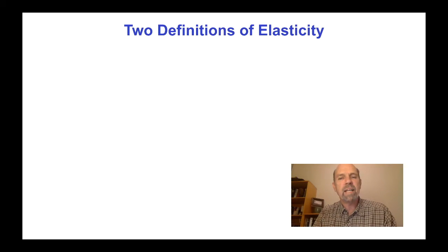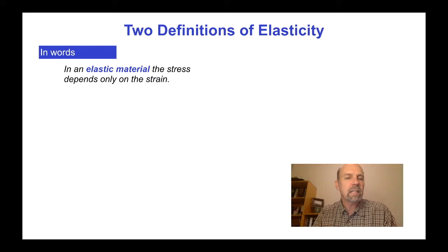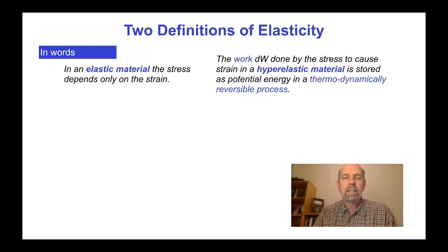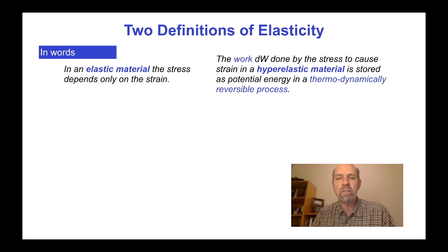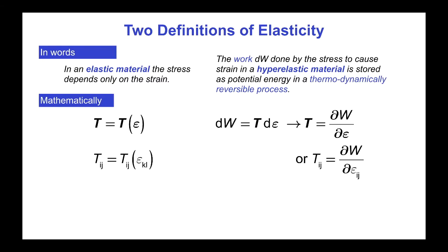There are two ways of defining elasticity. The first is that in an elastic material, the stress depends only on the strain. Mathematically, this is simply t equals t of epsilon, using the Cauchy strain, or in index notation, tij equals tij of epsilon kl.